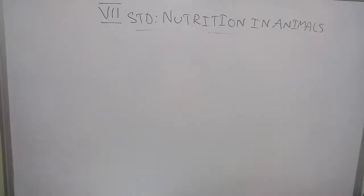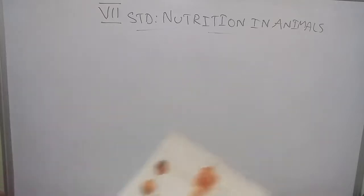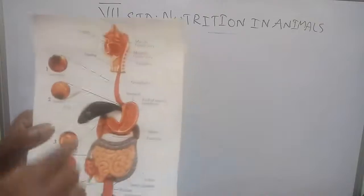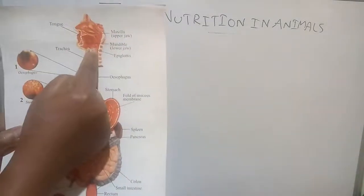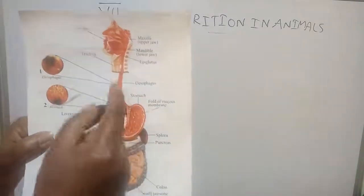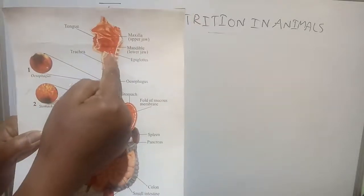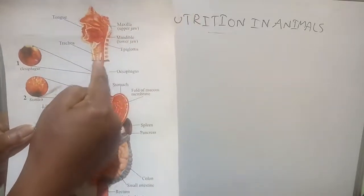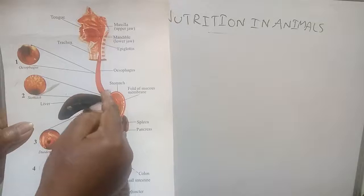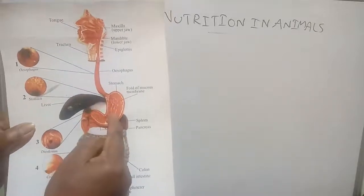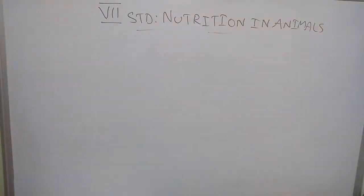This is 7th Standard Science Class, Nutrition in Animals, and I am Ashwadha talking to you all. Children, I hope you remember in the previous class what we have actually completed. We have completed with the food pipe and the esophagus — how the soft food enters the food pipe, how it actually travels and ultimately reaches the stomach. And now what will happen in the stomach is what we need to know today.